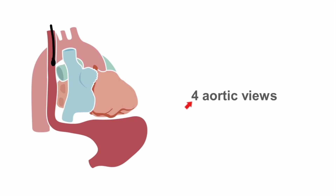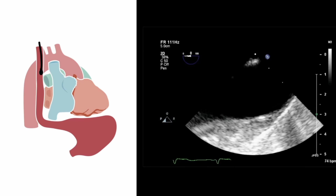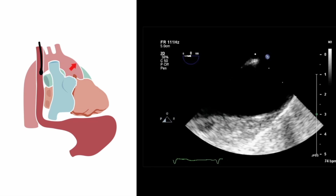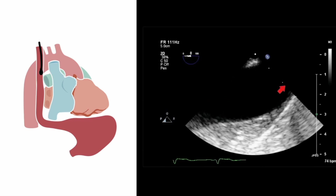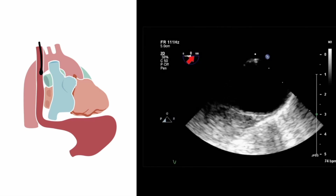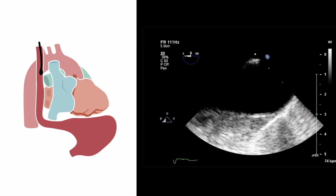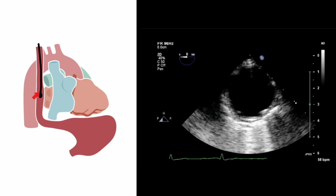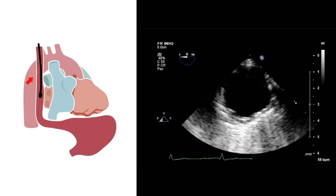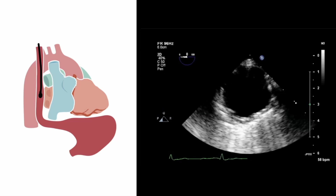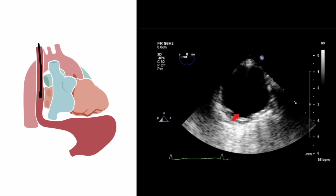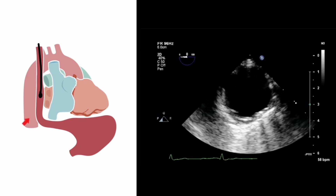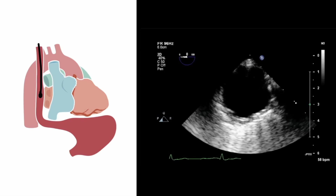Finally, there are also four commonly recognized aortic views. Two of these are obtained in the upper esophageal probe position, where we're looking primarily at the aortic arch. Here we're seeing the aortic arch in long axis, but by altering the transducer imaging plane angle we can also look at the arch in short axis. If we advance the TEE probe back down towards the mid-esophageal position and turn the probe 180 degrees, we're now looking posteriorly at the descending thoracic aorta — in short axis at zero degrees, or in long axis at approximately 90 degrees.